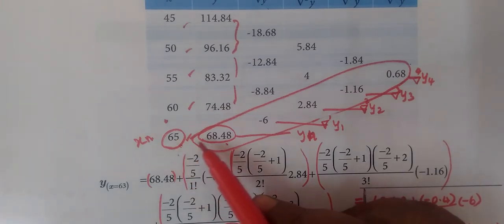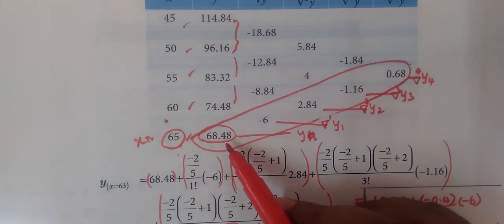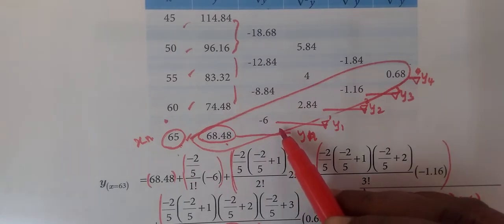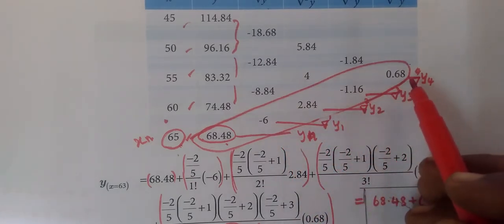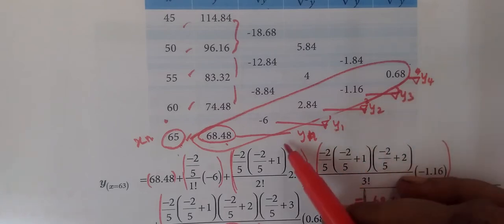Now this is x0, this is yn. Then x is the first term, this is second term, this is third term, this is fourth term. Then the corresponding number is in the formula.